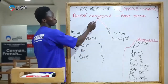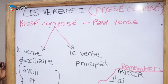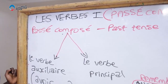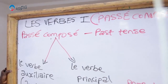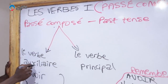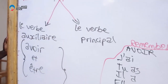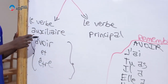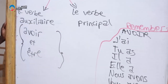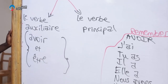Now, as the name implies — composé — it is composed of two different verbs. Passé composé is a tense composed of two different verbs: le verbe auxiliaire et le verbe principal. Le verbe auxiliaire means auxiliary verb, and the main verb is verbe principal.